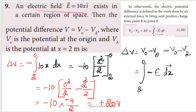We substitute the electric field value. The electric field is given as minus 10x, so we integrate minus 10x dx. The limits must be careful: V0 minus Va means the lower limit is x equal to 2 and the upper limit is x equal to 0. We substitute the E value and apply the integration formula.